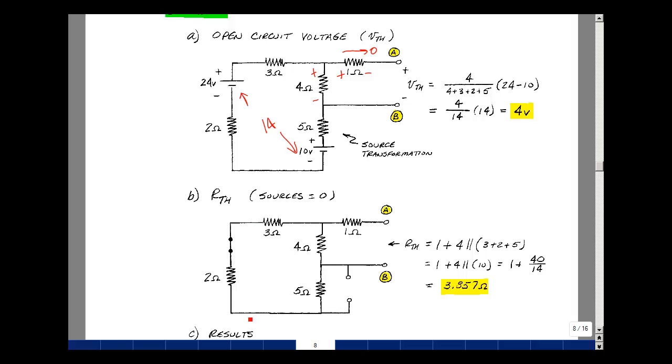Okay, so I've got 3 in series with 2 in series with 5, and all that's in parallel with 4, and then all that's in series with 1. These three added together, that's 10 ohms, in parallel with 4, product over the sum would be 40 over 14.